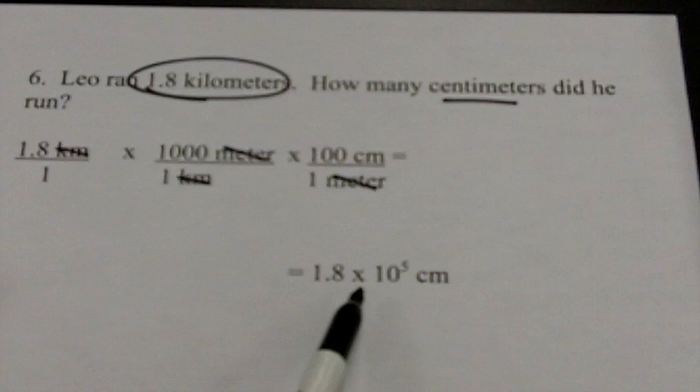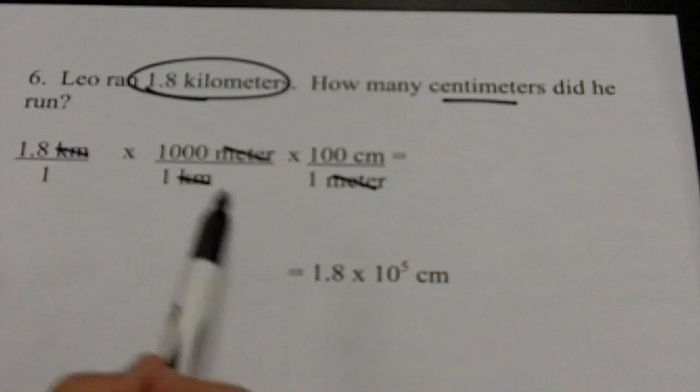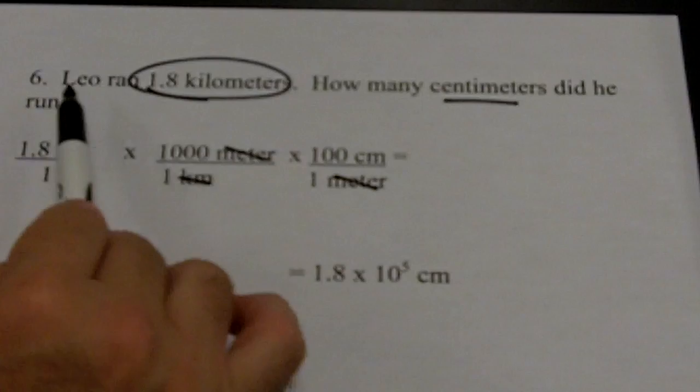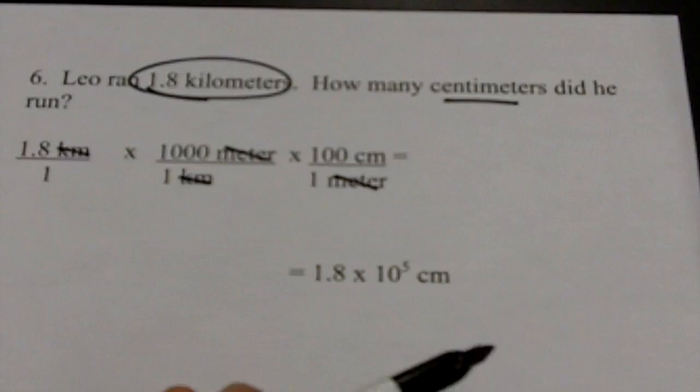Is that what I'm looking for? Yes — that's my final answer: 1.8 times 10⁵ centimeters. Is it in scientific notation? Yes. Do I have too many significant digits? Two here, and the conversion factors have unlimited significant digits. That's my final answer. By the way, Leo Manzano from the University of Texas runs this race — 1.8 kilometers — as well as anybody in the world.